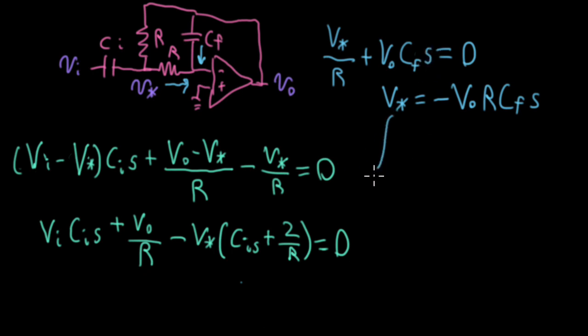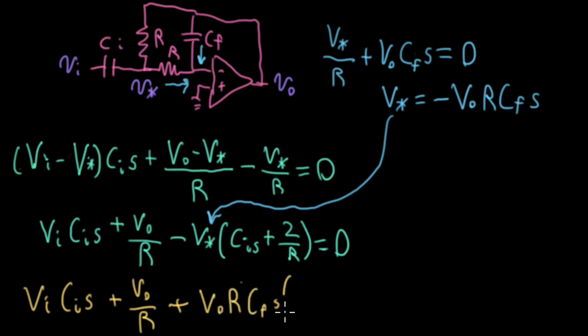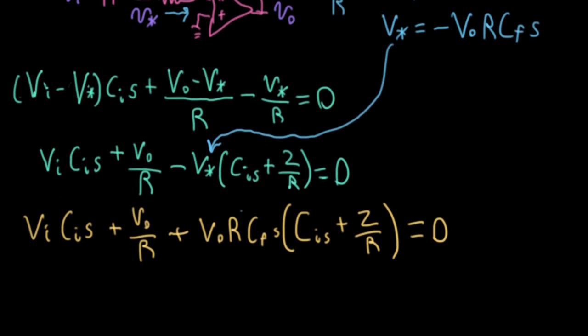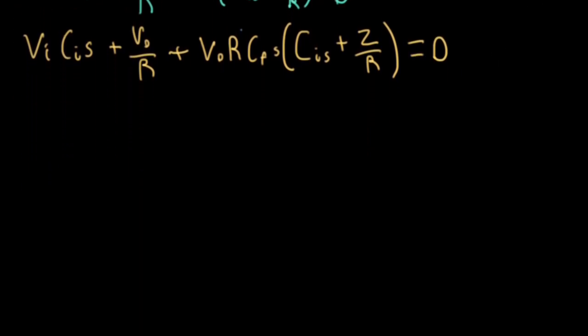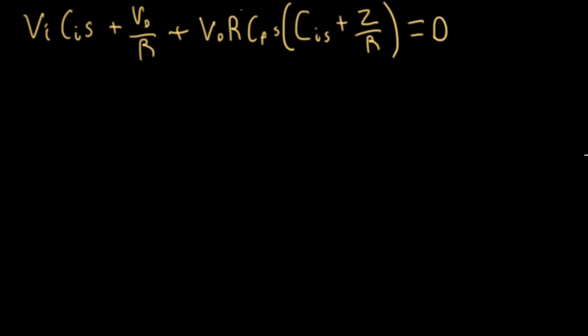Now, I'll take this V star and plug it into this expression down here. So plugging that in, I have VI, CI, S, plus VO over R, plus, because the minus signs cancel, VO, R, CF, S, and then I have the stuff in the parentheses, CIS, plus 2 over R equals zero. Now we're going to engage in everyone's favorite activity, which is watch Lanterman slog through some algebra.